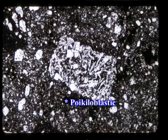Poikiloblastic texture is of different types. One: fishnet or skeletal texture, which indicates rapid crystallization. Two: sieve texture. Three: rotational texture, where the inclusions are oriented at an angle suggesting that the poikiloblast may have rotated during its growth, indicating syn-deformational or syn-tectonic growth. An alternative interpretation is the rotation of the foliation during the growth of the poikiloblast, which still makes the growth syn-deformational.